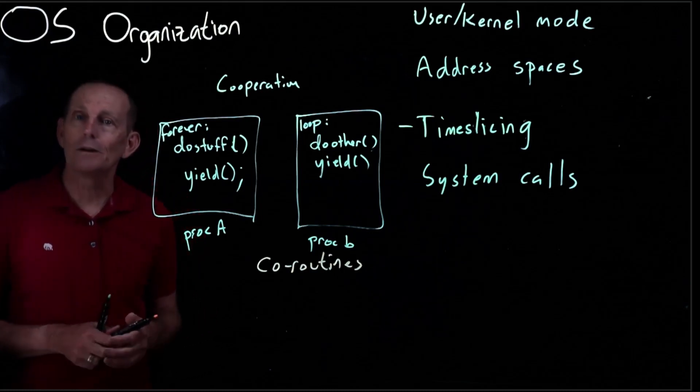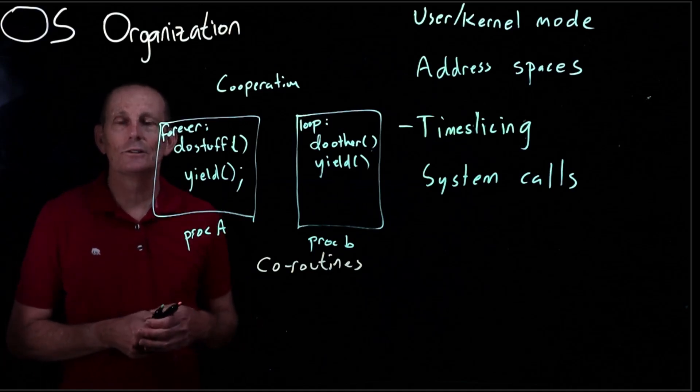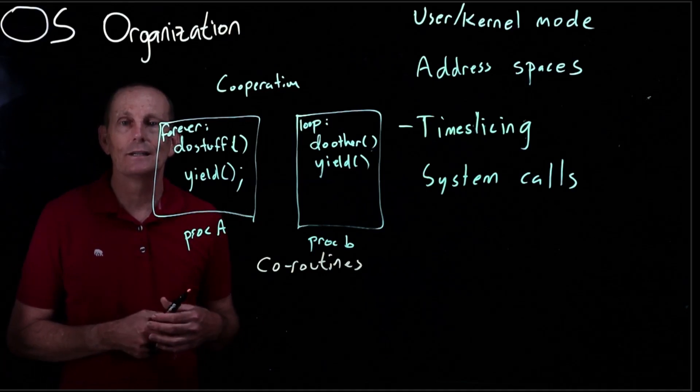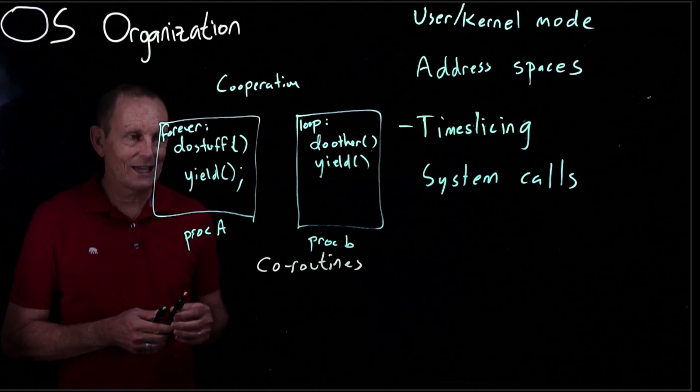So the good news about this is that any process knows exactly when it's going to be losing the CPU. Okay so that is handy. And what does yield actually have to do?